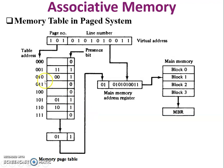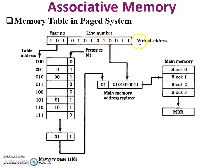In the detailed memory table example in a page system, this is the virtual address with page number 101. Searching in the memory page table, page number 101 maps to block 01. The presence bit indicates if 1, the block is active; if 0, it is inactive. All bits are present (1), and block 01 maps to main memory block number 1, so data is available.